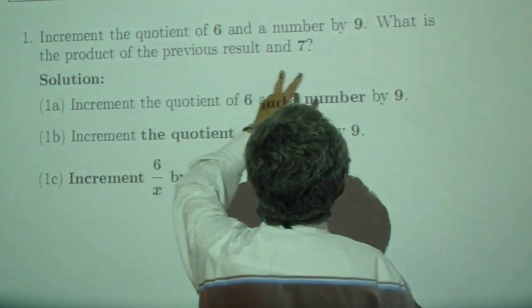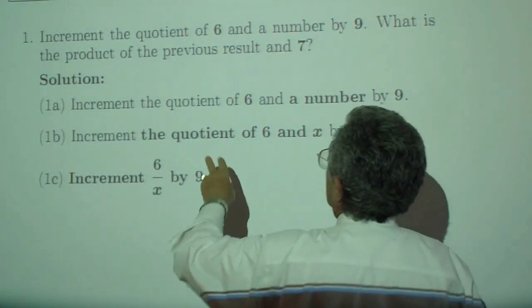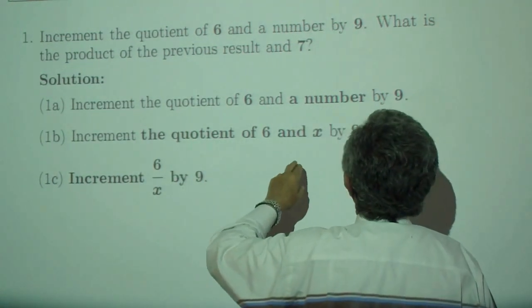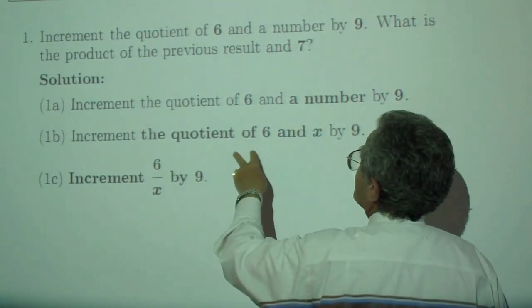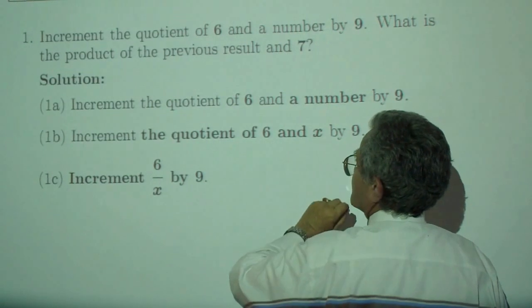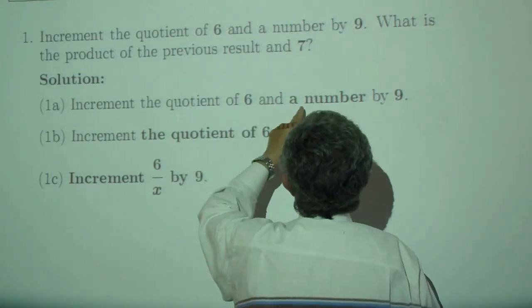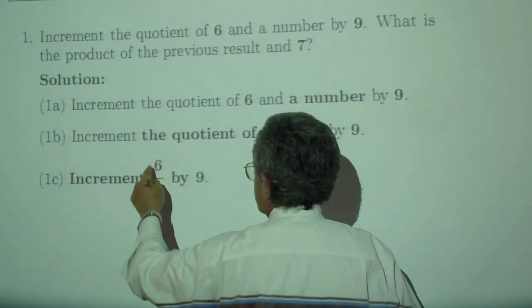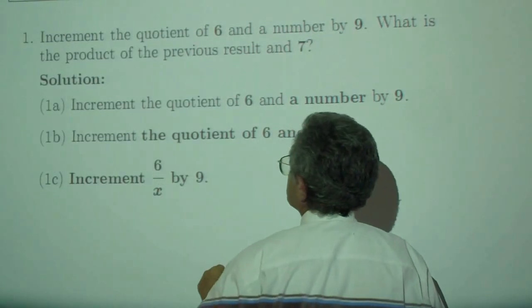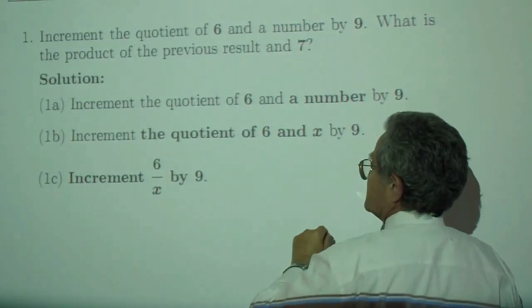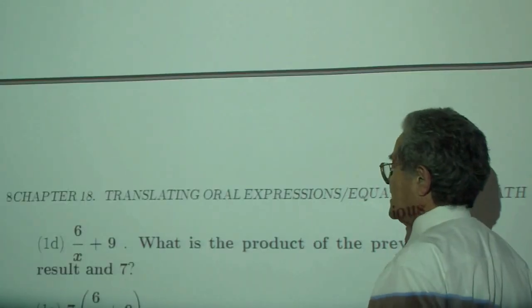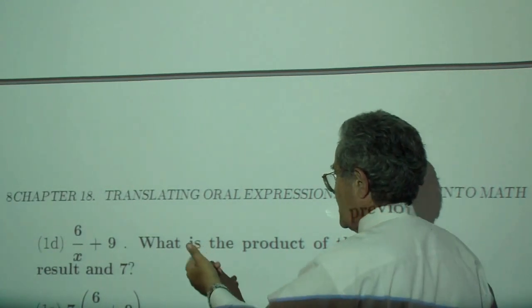Increment the quotient of 6 and a number by 9. The number is x, so the quotient of 6 and the number - quotient means division - increment that by 9, so just add 9 to that. And here we are.